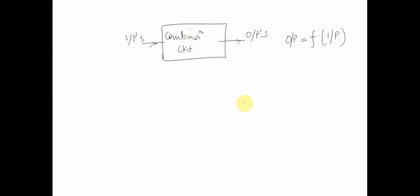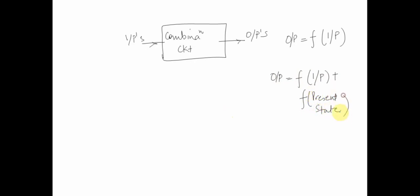Sequential circuits are different from combinational circuits because their output is not only a function of input but also a function of the present or current state of the system. Which means they have a set of memory and timing elements related to them. If you have to draw a sequential circuit, it would look something like this.